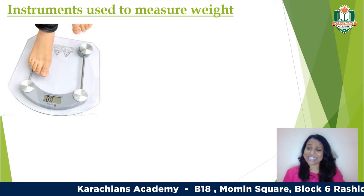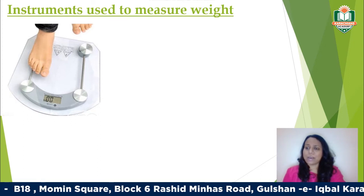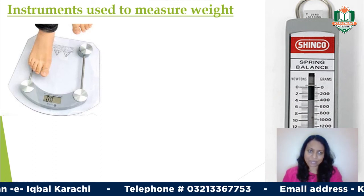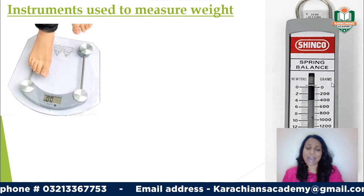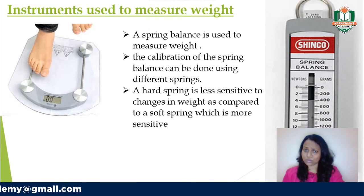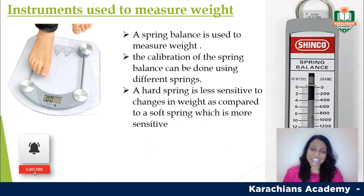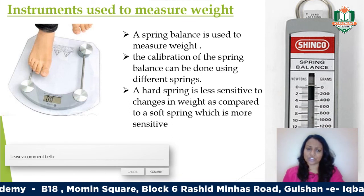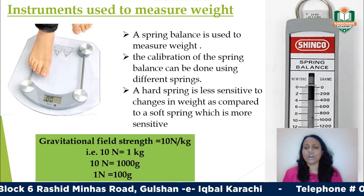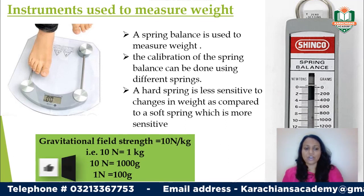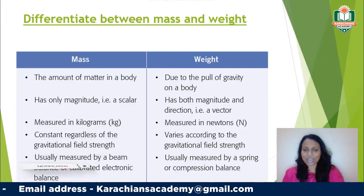To measure weight, you can use a weighing scale calibrated in kg, or one calibrated in newtons. The basic instrument used is a spring balance. The spring balance has calibrations in newtons but can also be given in grams or mass units. It works on the principle that the more mass placed on the spring, the more it extends downward. Harder springs are less sensitive to changes in weight and are used for larger ranges, while softer springs are more sensitive and used for smaller ranges. Since g = 10 N/kg, 1 newton corresponds to 100 grams in the spring balance calibration.